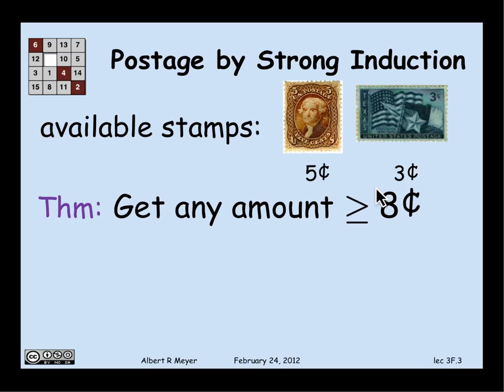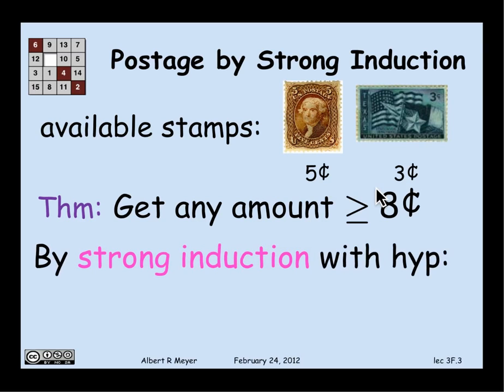As an application of it, let's prove something that we've already proved by well-ordering. In fact, strong induction and well-ordering are closely related, as we'll also discuss later. So let's prove that using 3 and 5 cent stamps that you can get any amount of postage greater than or equal to 8 cents. And I'm going to prove this by strong induction with the induction hypothesis P(n) that says I can form n+8 cents. Clearly, if I can prove for all n P(n), then I've proved that I can get every amount greater than or equal to 8 cents.